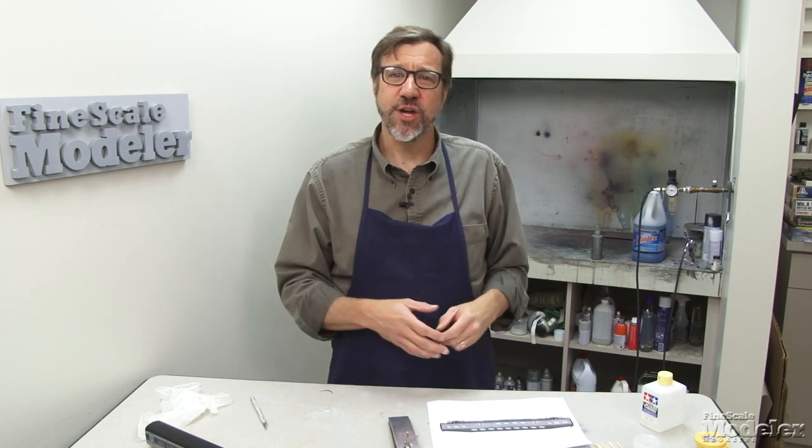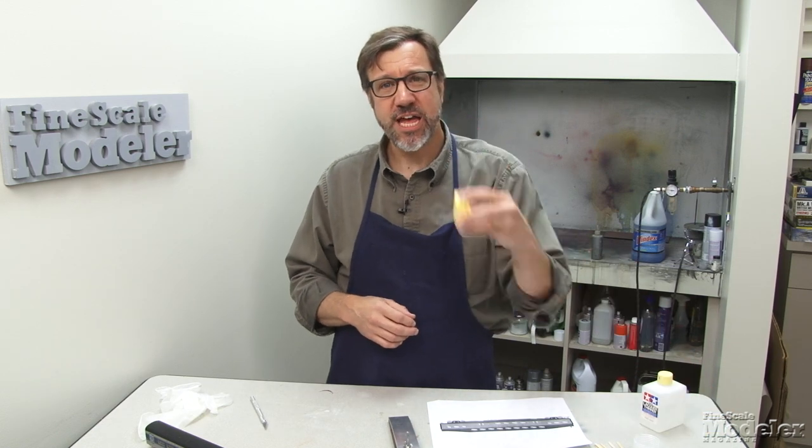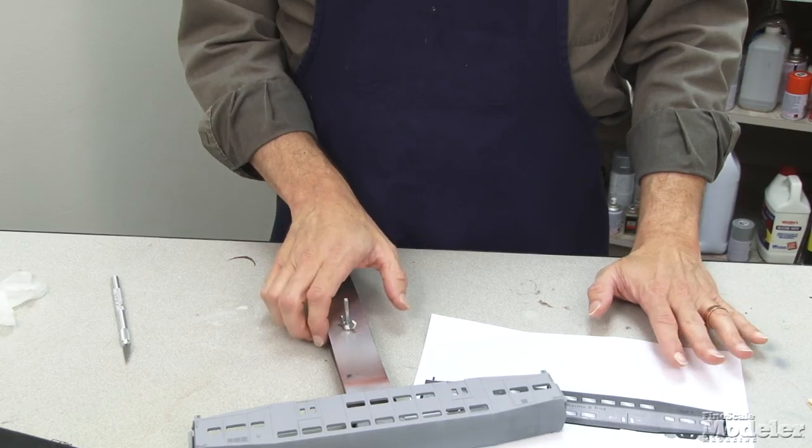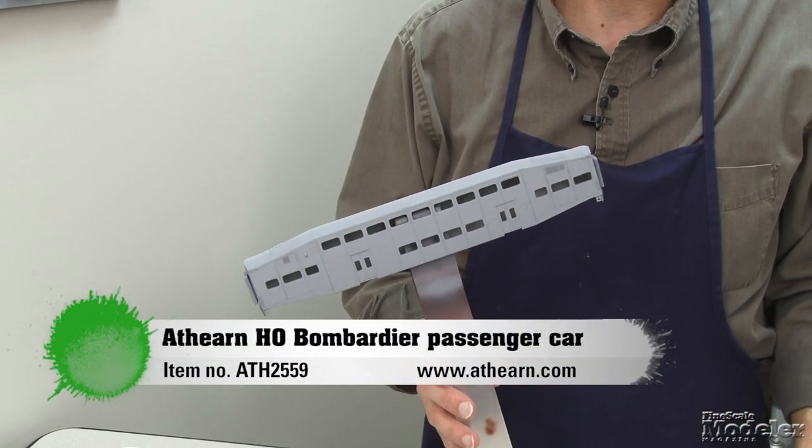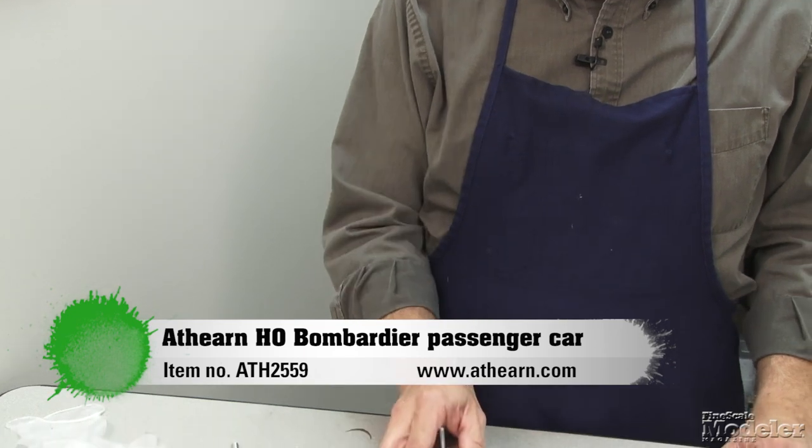Now we're going to move on to masking, starting with masking straight lines with tape. For that, we are going to return to this double-deck train car, passenger car from Athern, which we showed some skills on earlier in the series.